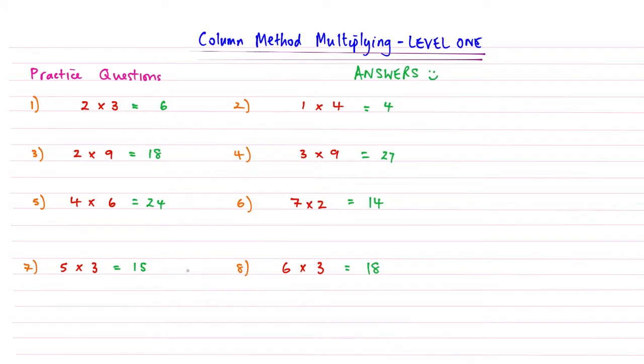Here are your quick answers. The answer to 1 is 6, the answer to 2 is 4, the answer to 3 is 18, the answer to 4 is 27.